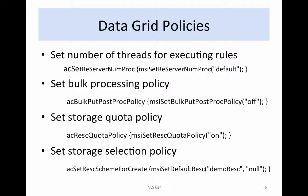The storage selection policy defines which storage resource to use when files are put into the data grid. This default location can be overridden by the data load command to specify another location. To keep a single resource from being overloaded, the default location can be a group of storage resources, allowing the data grid to distribute files across the storage group.